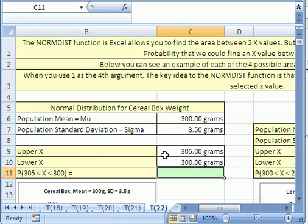Here's our example. If we want to find the probability that we could pull a box of cereal and get a weight between 305 grams and 300 grams, that's where this function NORMDIST comes in.